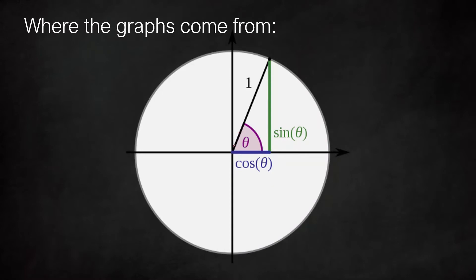If we set the hypotenuse of this triangle equal to 1, then inside the angle theta — theta is just a variable used for angles instead of x sometimes — the side opposite the angle theta is sine theta and the side adjacent to the angle is cos theta. If you want to see how this works in more detail have a look in the last video, but for now let's just see how we can use it as a starting point to get the graphs.